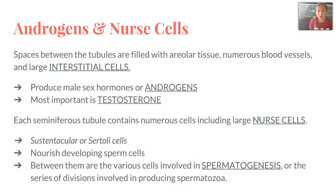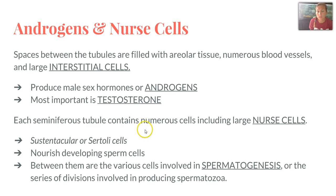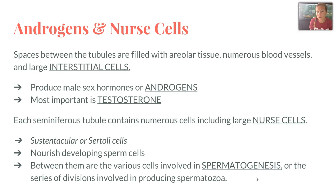The spaces between the tubules are filled with areolar tissue, numerous blood cells, and large interstitial cells — this is where androgens are produced. The most important one is testosterone, which we'll talk more about later. In each seminiferous tubule, there are large nurse cells, also known as sustentacular or Sertoli cells. They nourish developing sperm cells, and between them are various cells involved in spermatogenesis, or the making of sperm.